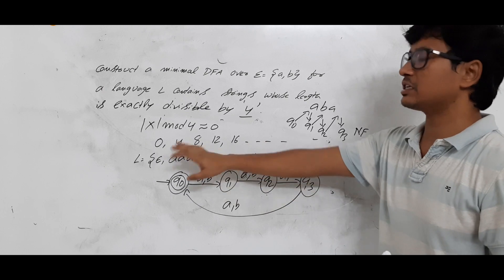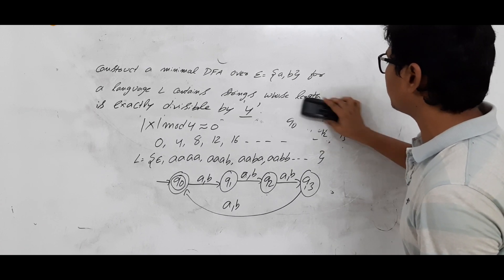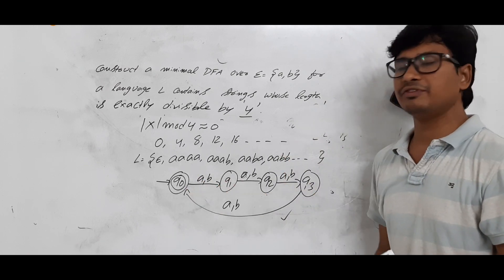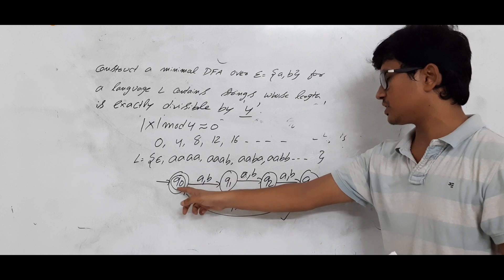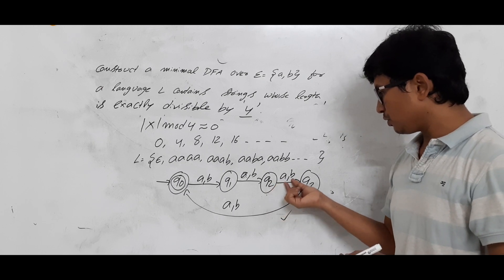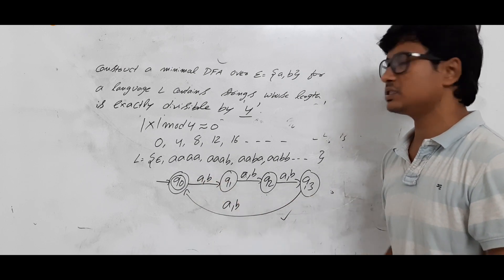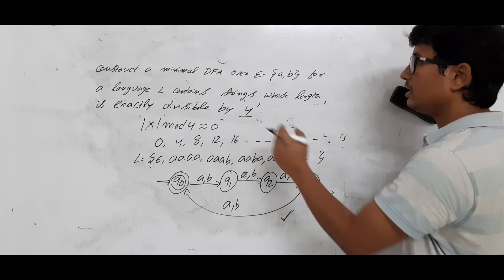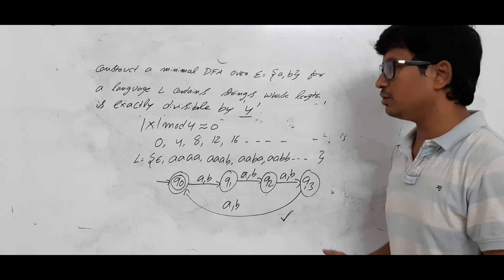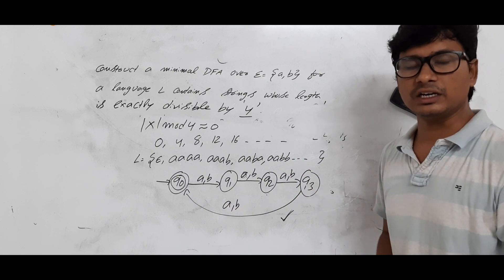We have verified that strings belonging to language L are accepted, and strings not belonging to L are not accepted. So this DFA is correct for the given question. We also need to check whether it is a complete DFA. Q0 on A and B has a transition. Q1 on A and B has a transition. Q2 on A and B goes to Q3. Q3 on A and B goes to Q0. So it is a complete DFA and it is the minimal DFA for the given question. I hope you have understood the video. Thank you so much.